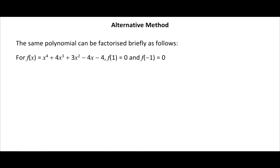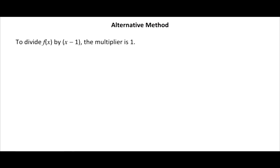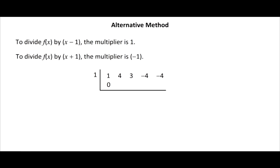Since f(1) equals 0 and f(minus 1) equals 0, both x minus 1 and x plus 1 are factors of f(x). We first divide f(x) by x minus 1 using multiplier 1, and then divide by x plus 1 using multiplier minus 1, applying synthetic division for each step.